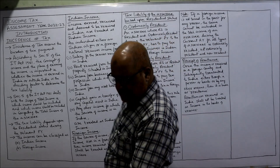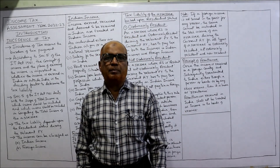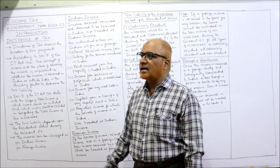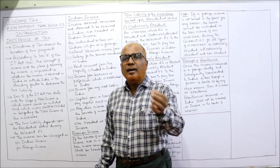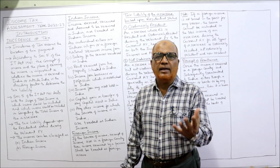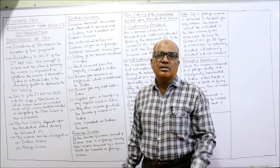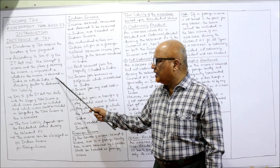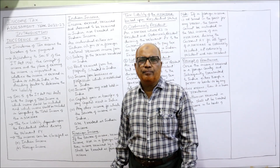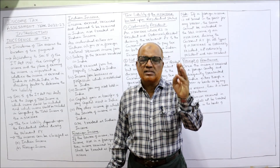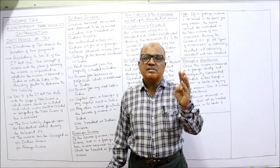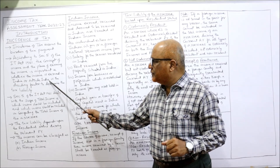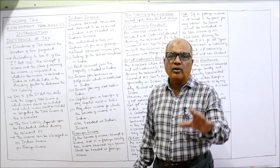Incidence of tax means the burden of tax payment and the scope of total income. According to Section 5 of the Income Tax Act 1961, the concept of income and the place of earning the income are important. First, what do you mean by income? And second, where the income is generated — whether it is earned in India or outside India — is the deciding factor in order to calculate the tax liability.